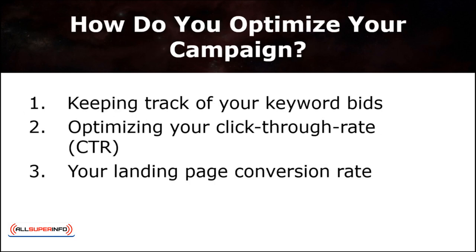The question is: how do you optimize and assess your Google AdWords campaign to ensure you are on the right track? The answer is to test run your campaign in three different methods: one, keeping track of your keyword bids; two, optimizing your click-through rate, CTR; and three, your landing page conversion rate.